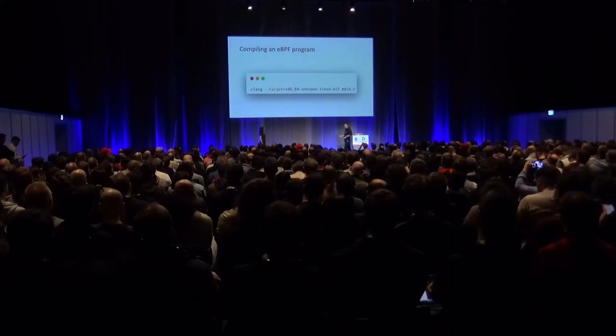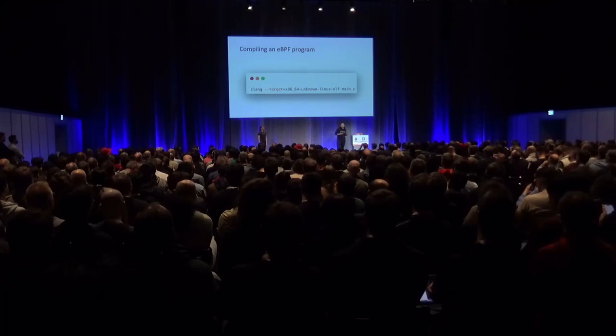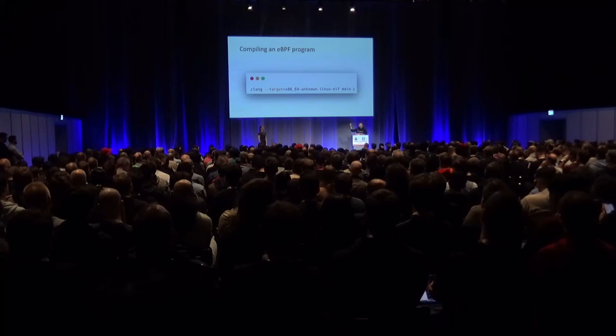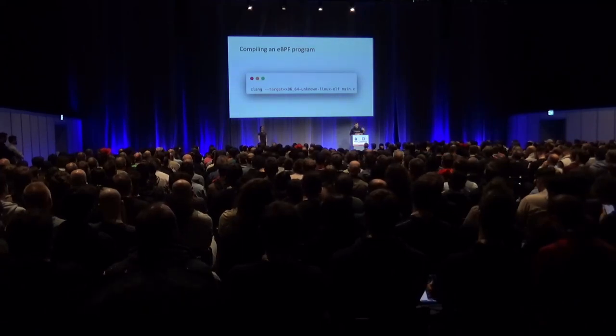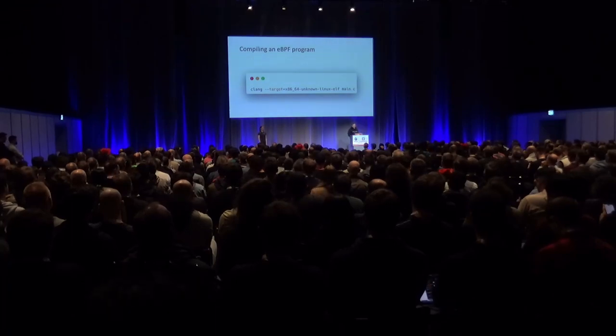When we write eBPF programs, it's not all that different from writing regular programs. If we write a C program, we compile it with a toolchain like Clang and specify the target — for example, x86 Linux. For a BPF program, we still write C code; the only difference is the target. What it outputs is eBPF bytecode. This is important, so let's remember that for later.